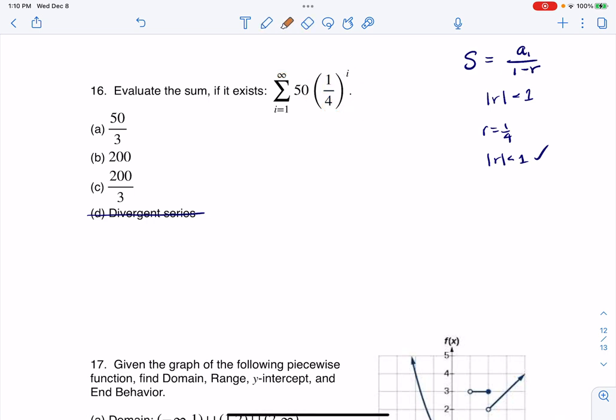All right, so then the thing that we have to do in solving this is we need to actually find the first term in this geometric series. So if I was going to let i equal 1, if I want to find a sub 1, that would be 50 times 1 fourth, which is 50 over 4.